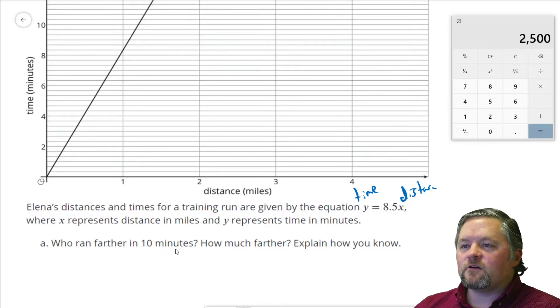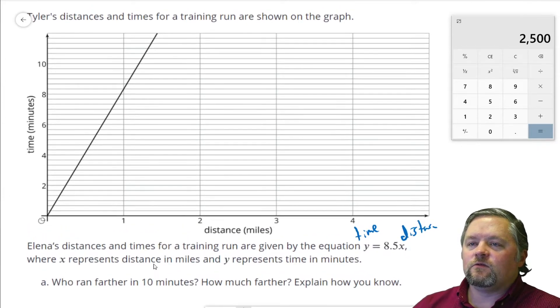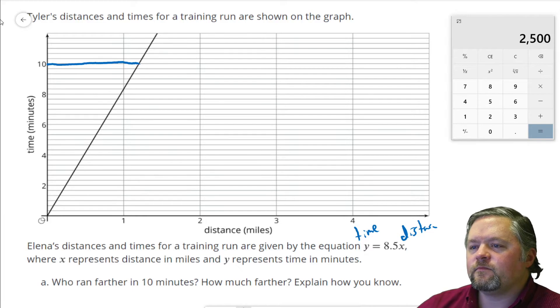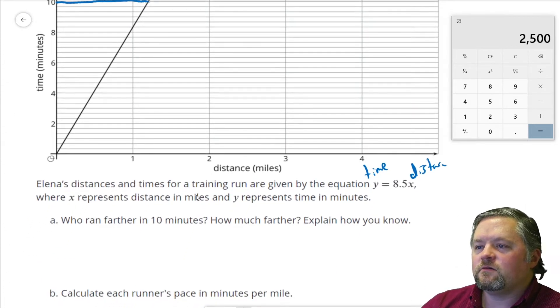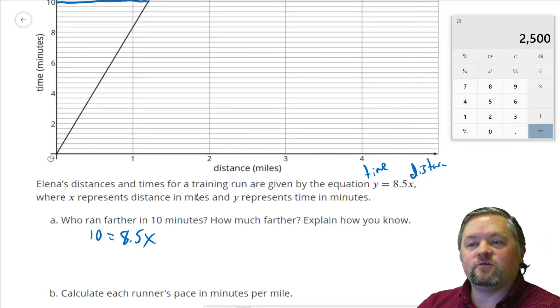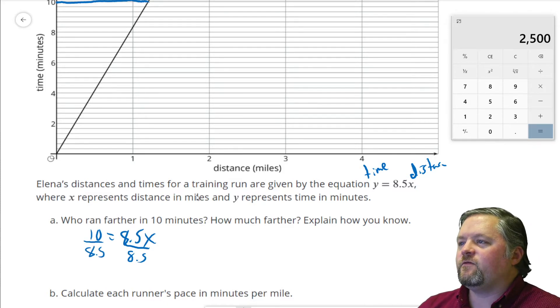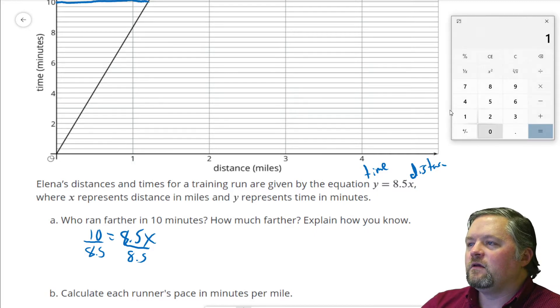Who ran farther in 10 minutes? Well, let's check. This one we have on the graph, that's 10 minutes. That looks like about 1 and a quarter. Now, our other person, we have an equation. Y is a time. 10 equals 8.5x. I substituted in our time into the equation to isolate the x. Divide each side by 8.5. 10 divided by 8.5 is...